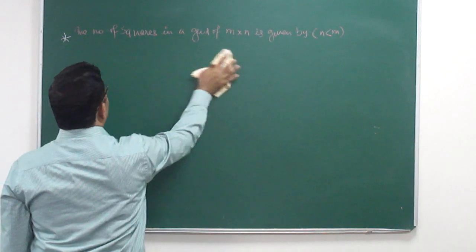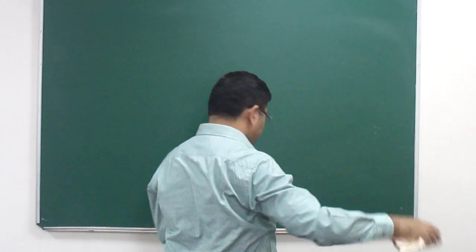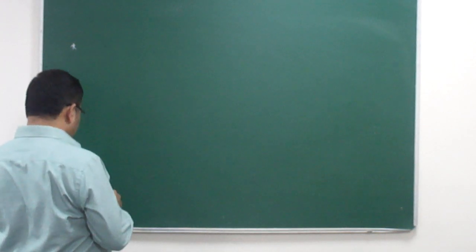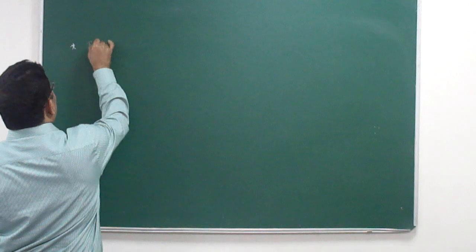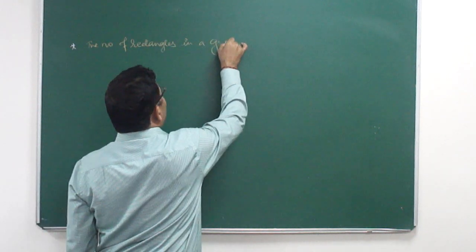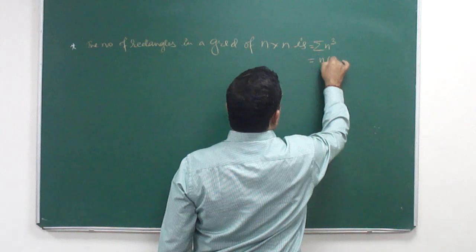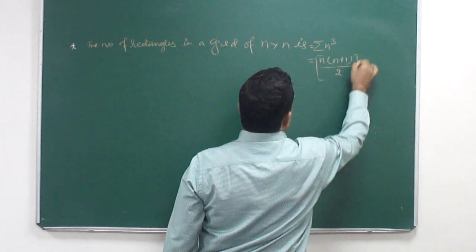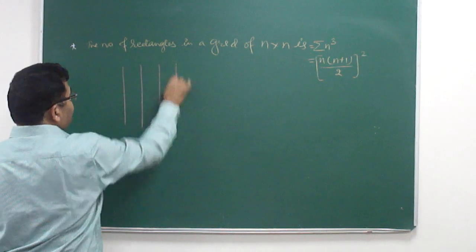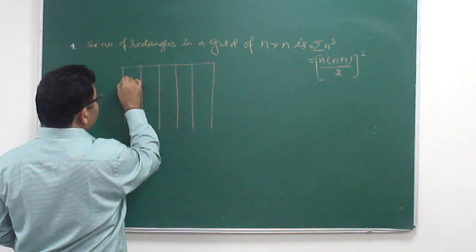One more point: to find the number of rectangles in a grid of n × n, the formula is sigma n³, which equals [n(n+1)/2]² where there are n vertical and n horizontal grids. For example, five lines give one, two, three, four blocks.